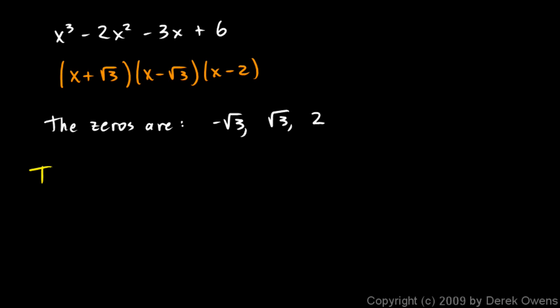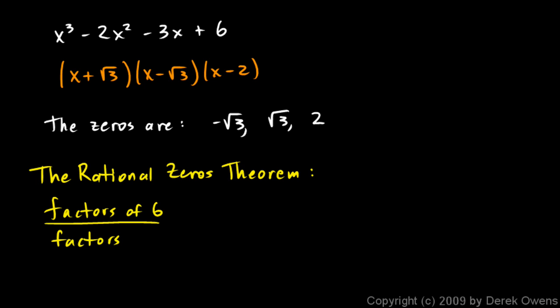The Rational Zeros Theorem says I'm going to take factors of 6 divided by factors of 1, and that's going to give me this list: ±1, 2, 3, or 6. Not a very big list, eight numbers altogether. The denominators ended up being really simple because of that one.